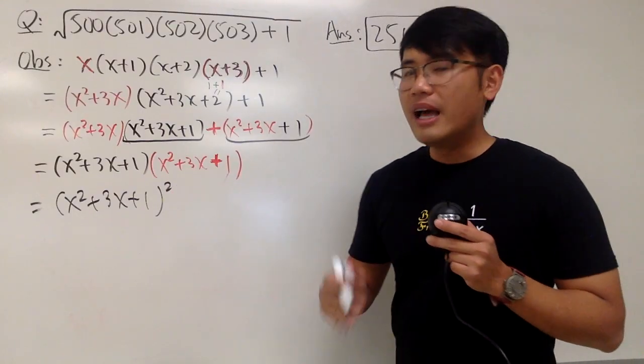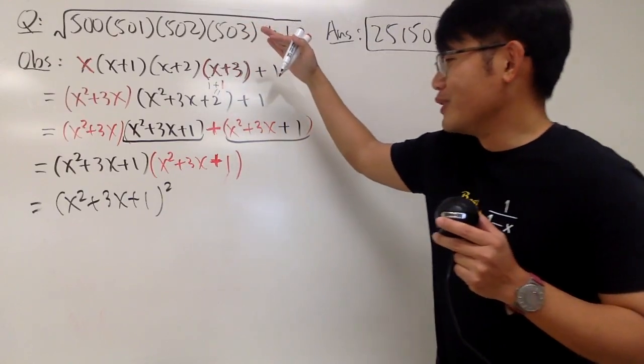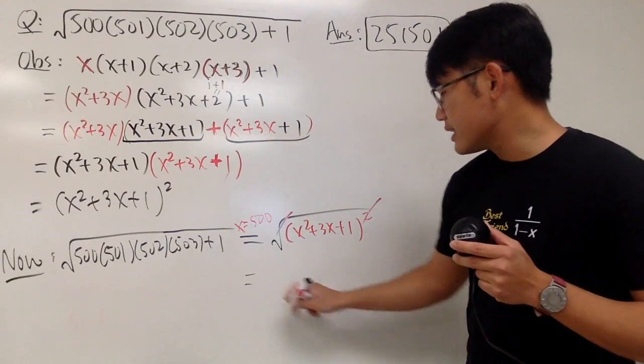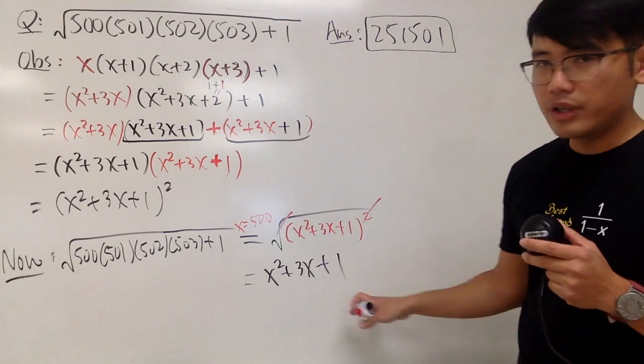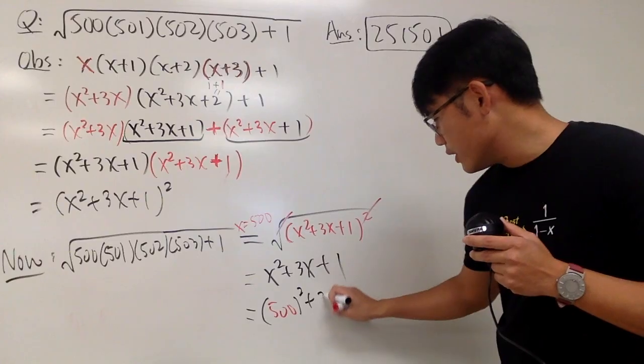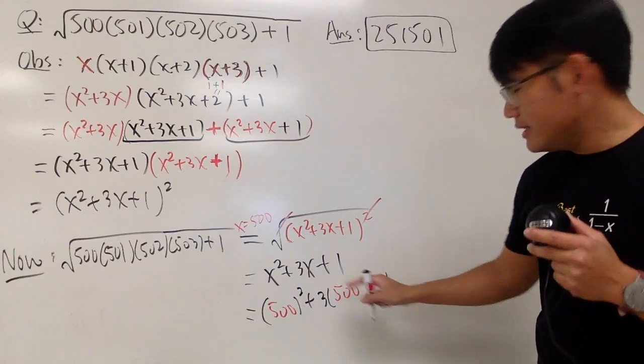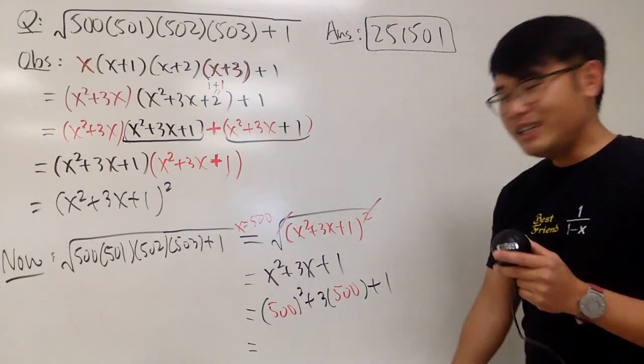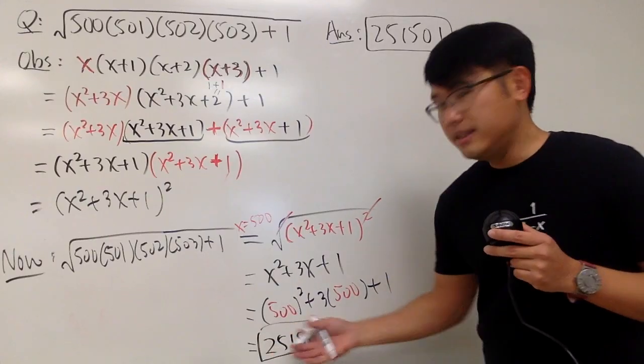And now, the original expression is just going to be, you can put this inside. And of course, this and that will cancel. Very nice. And you just get x squared plus 3x plus 1. And you put 500 in there. So you get parentheses 500 squared plus 3 times 500 and then plus 1. Man, seriously, you guys, don't you guys just love the good old algebra days? Right? Anyway, you multiply everything, you get that number. So this is it.